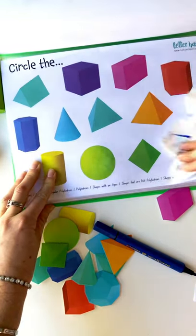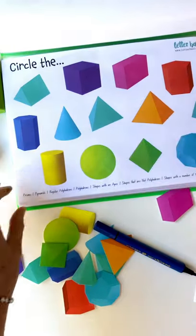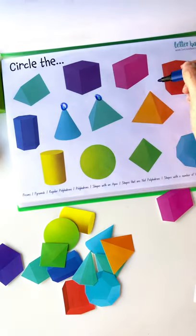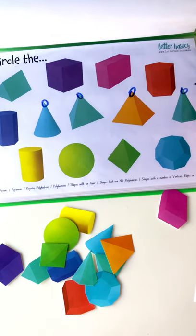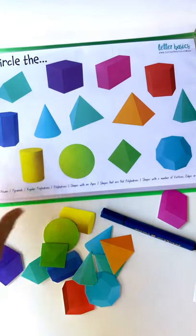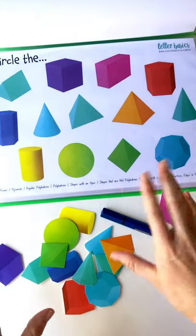Shapes with an apex, so you're just working on that vocab as well. My voice is going. So we've got the cone, the triangular pyramid, square pyramid, and hexagonal pyramid. They're the apexes at the top. And we've done the shapes that are not polyhedrons, and then I'm not going to go through that one, that'll take forever.